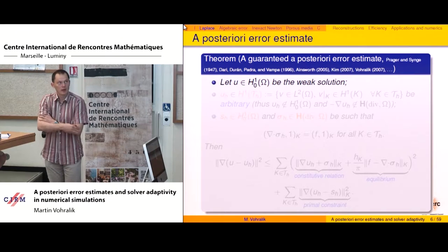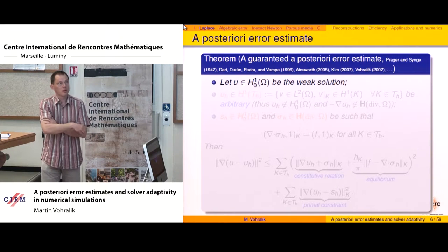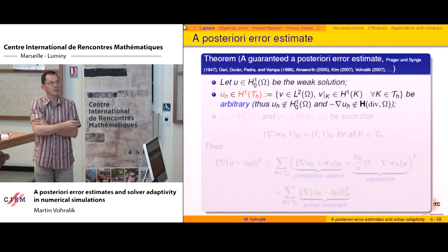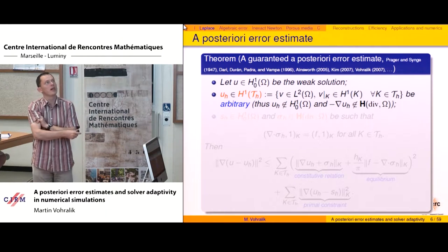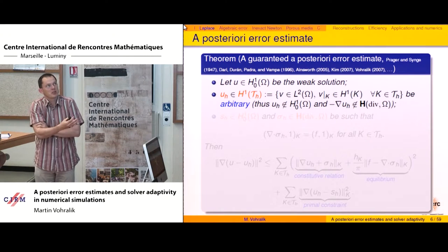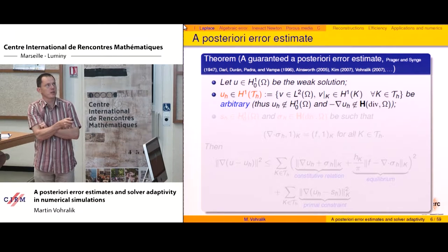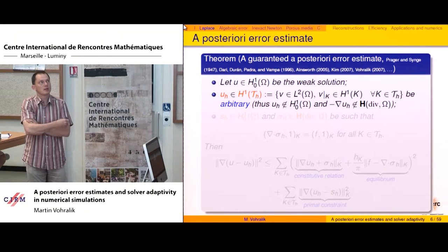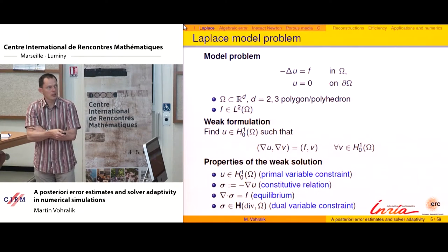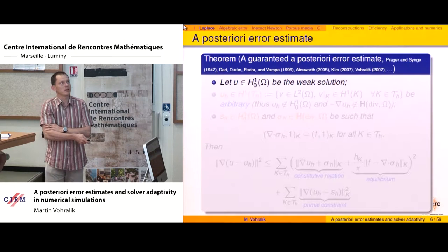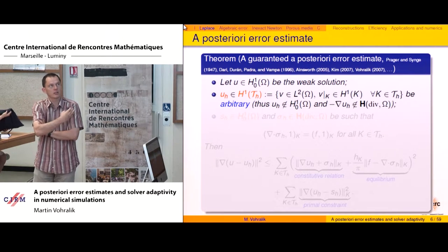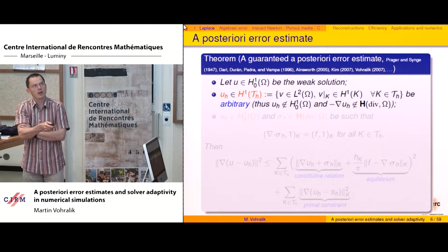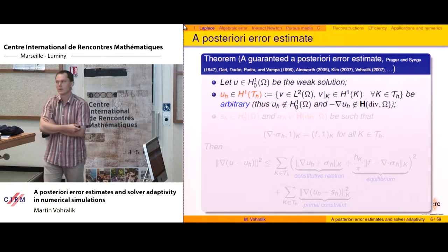Now let's think about a numerical solution obtained with your favorite method — finite elements or finite volumes — without any linear algebra error. The solution is typically a piecewise polynomial, H1 element by element. But many methods do not satisfy at least one of the two constraints. In DG, for example, U_h is not continuous and its flux does not sit in the correct space. So this motivates the introduction of two reconstruction objects.